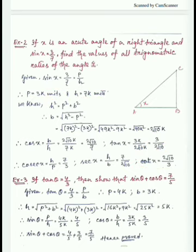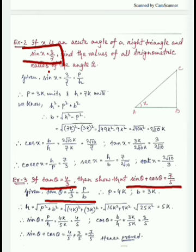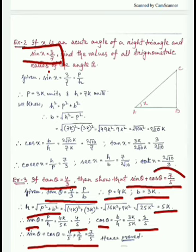Now the last example: tan theta = 4/3. Show that sin theta + cos theta = 7/5. Tan theta = P/B, so P = 4 and B = 3. By Pythagoras, H = 5. So sin theta = P/H = 4/5, and cos theta = B/H = 3/5. Therefore, sin theta + cos theta = 4/5 + 3/5 = 7/5, which is the required result.